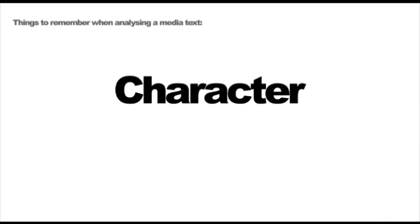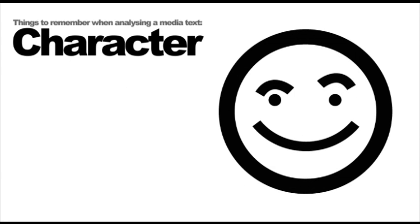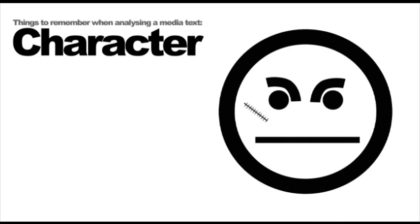Character. This is quite a complicated one with lots to remember, so we will tackle the detail in another revision session. Let's have a look at the basics, though. Protagonist — this is the story's hero. Antagonist — this is the story's villain.